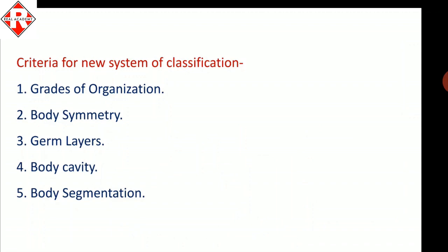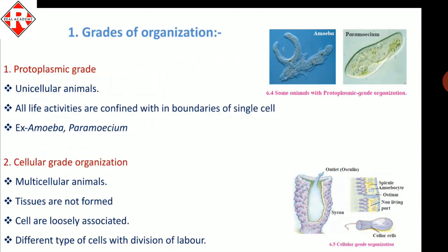We must understand the criteria for the new system of classification. Those criteria are: grade of organization, body symmetry, germ layers, body cavity, and body segmentation. We will study all these criteria one by one.